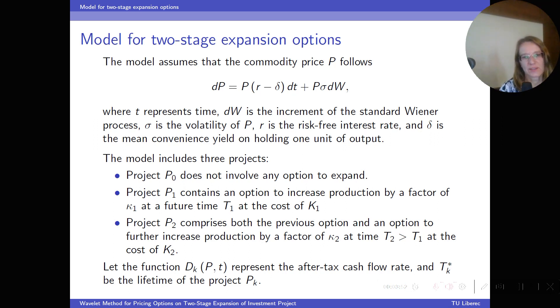The first project, P0, doesn't involve any option to expand. The second project contains an option to increase production by a factor of kappa1 at time T1 at cost K1. And the last one comprises both the previous option and option to further increase production by a factor of kappa2 at time T2 at cost K2.